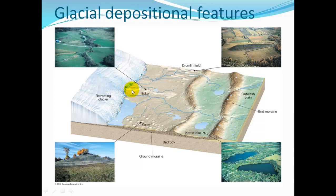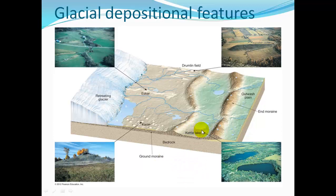An esker forms from a little stream underneath the ice depositing material in its little channel. Drumlins are teardrop-shaped hills of glacial till deposited by the ice. The outwash plain is where more sediment is washed by overland flow from the melting ice on top of the ground moraine. Kettle lakes are left when chunks of ice — blocks of ice — melt away, leaving basins that collect water.